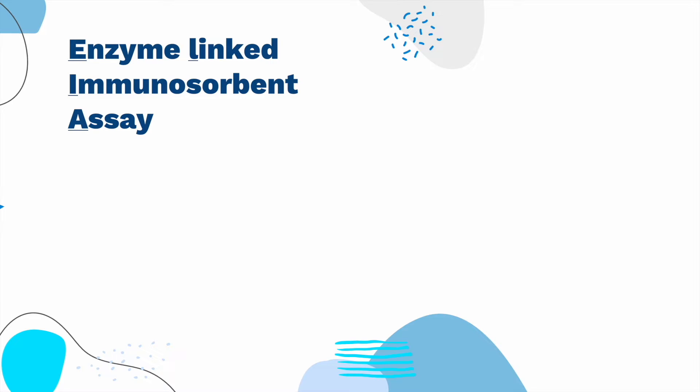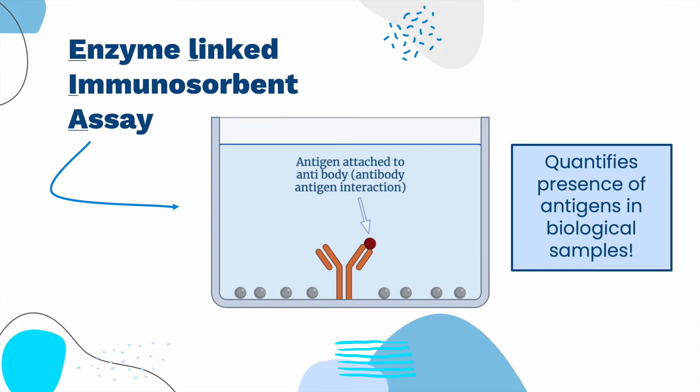ELISA, which stands for Enzyme-Linked Immunosorbent Assay, is a technique used to quantify the presence of antigens in biological samples. An ELISA, like other types of immunoassays, relies on antibodies to detect a target antigen by using highly specific antibody-antigen interaction.